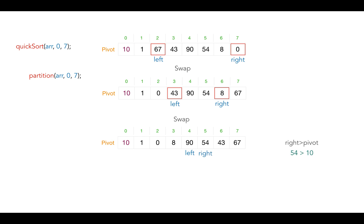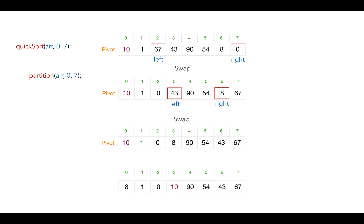There comes a point when the right pointer crosses the left pointer, and this is when we are done with the current pivot. At this point it's time to perform partitioning, and we do that by replacing the value at the right pointer with the pivot element. Once this is done, you will see the partitions on either side of this pivot — all elements to the left of the pivot are smaller, and all elements to the right are greater. Now we have two more arrays, and we are going to do the same with these arrays.